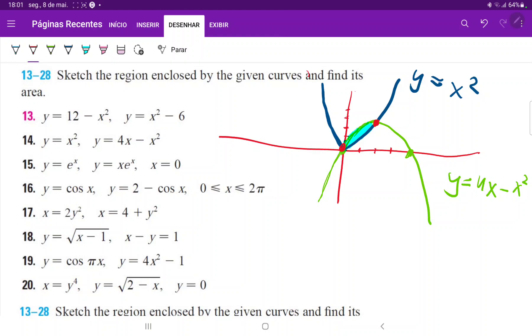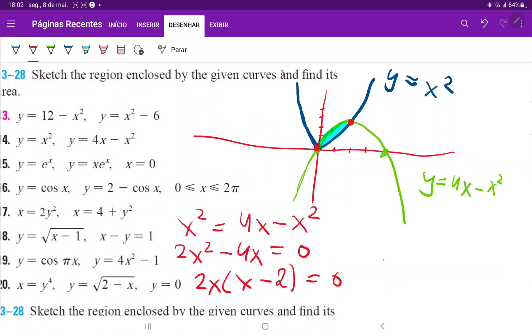We set these equations equal to each other so we can see the exact point that they intersect. So we have that x squared equals 4x minus x squared. We'll just bring everything over to one side. That is 2x squared minus 4x equals 0. So now all I have to do is factor. So 2x times x minus 2 equals 0. And I can now confirm that my points are x equals 2 and x equals 0.